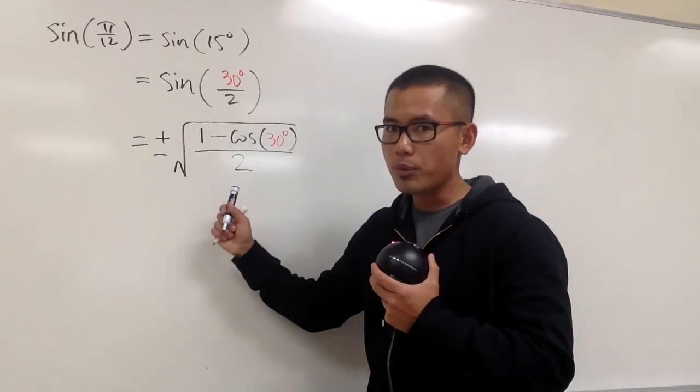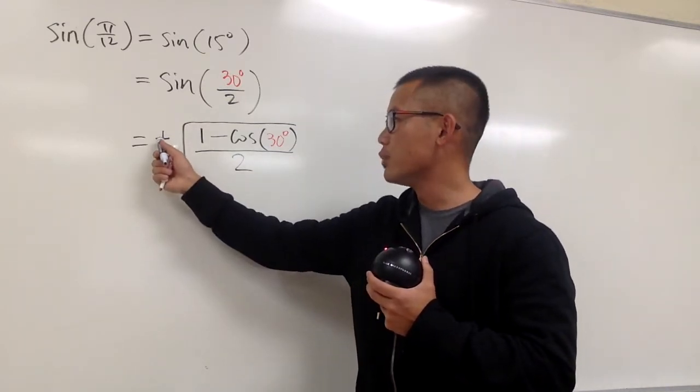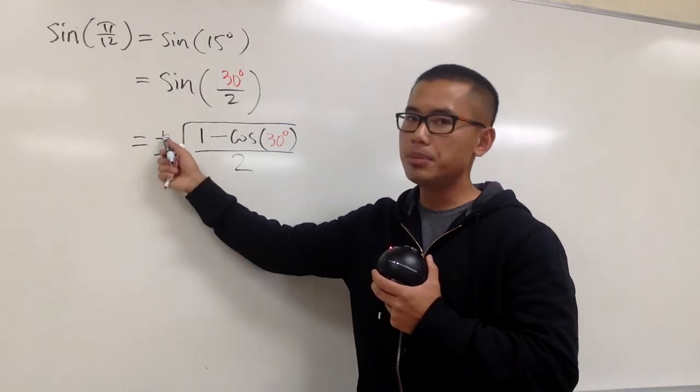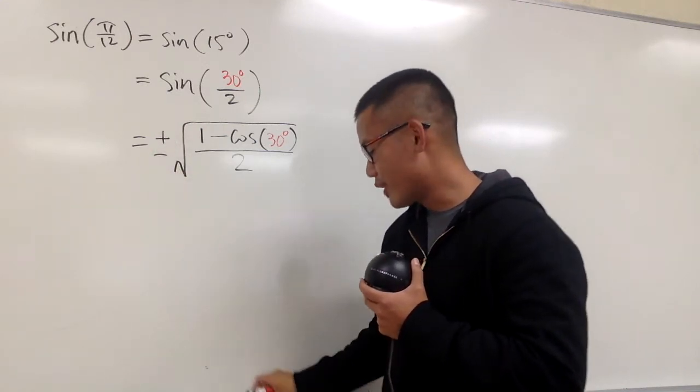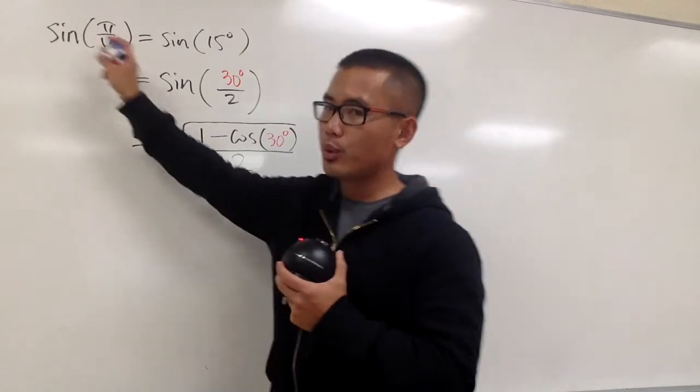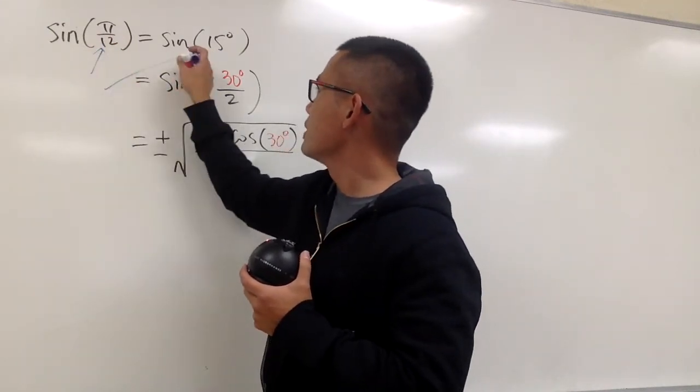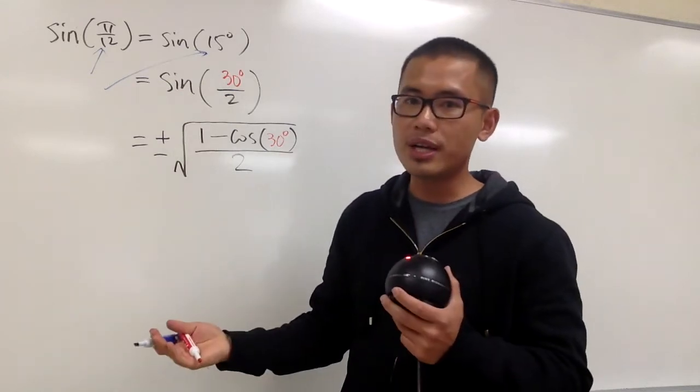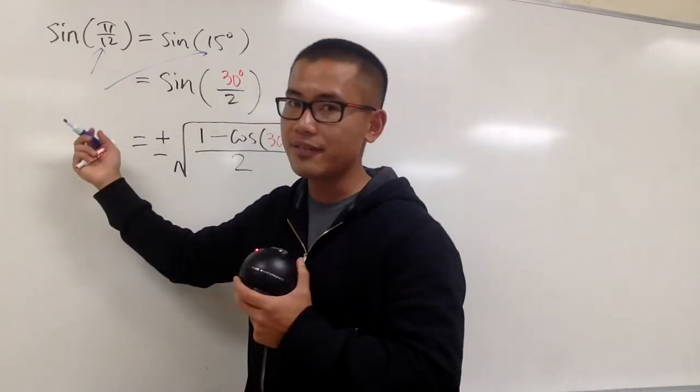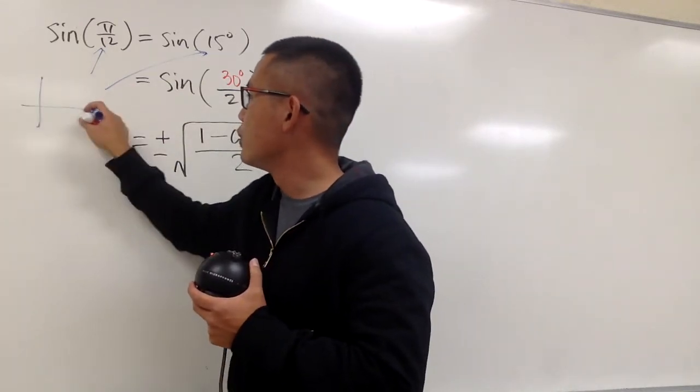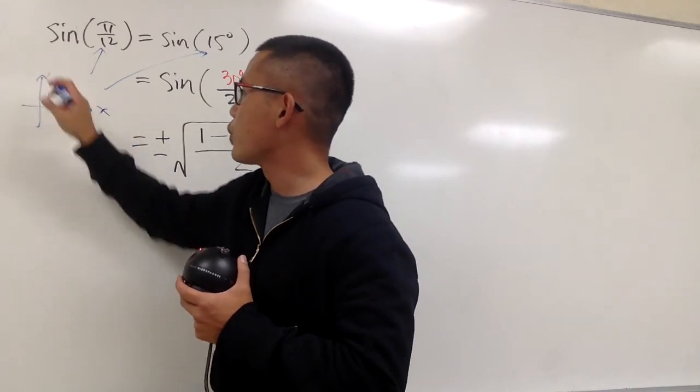Well, this is just the general formula. First job is we have to figure out, is it either plus or minus? To do so, you have to refer back to the original question. You know this is pi over 12, or if you would like, you can look at this as 15 degrees. And we are looking for the sine value for that.